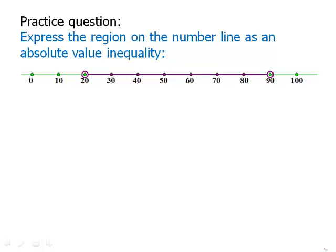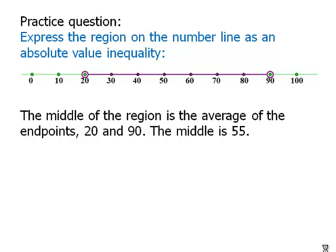But that's not what we're being asked. We're not asked for an ordinary inequality. We want an absolute value inequality. The first thing we need to do is find the center of that region. The middle of the region is the average of the endpoints, 20 and 90. So that middle is 55.